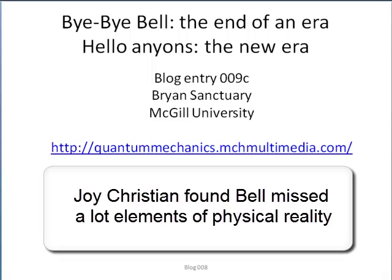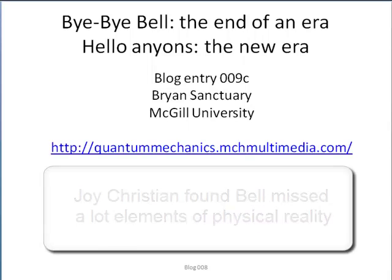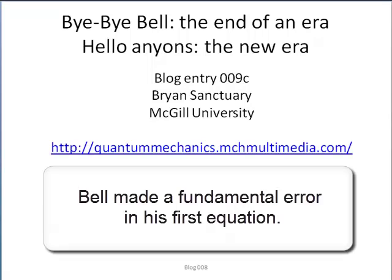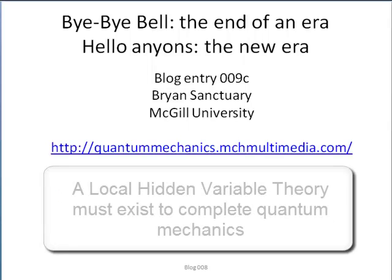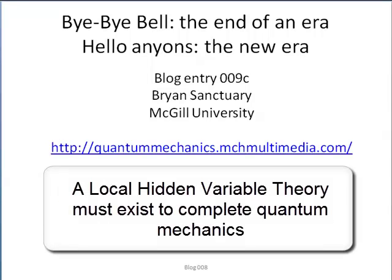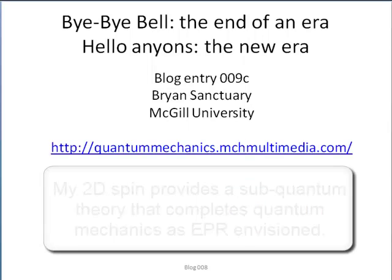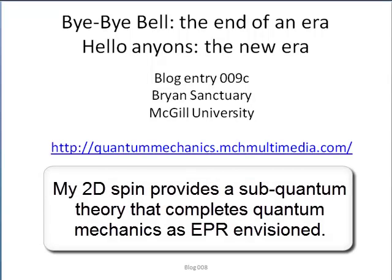Second, Joy Christian has demonstrated that Bell missed a lot of elements of physical reality of spin. Bell made a fundamental error; including these elements led to the correct form of Bell's inequalities for spin using no quantum mechanics. These theories also show that a local hidden variable theory must exist to complete quantum mechanics.